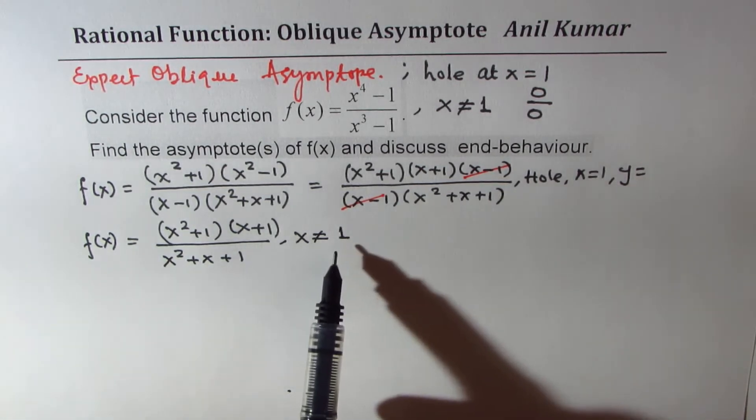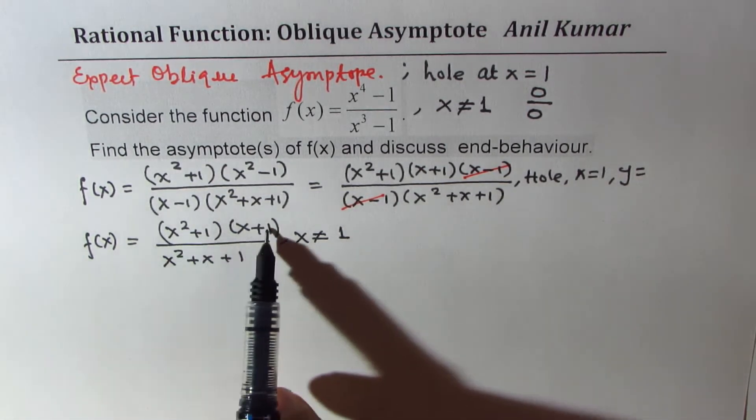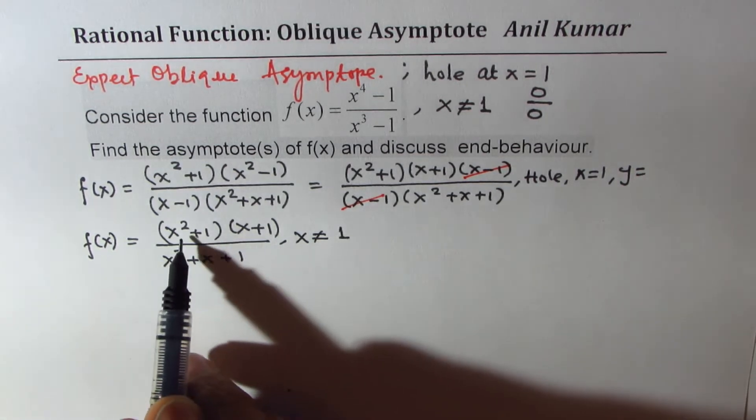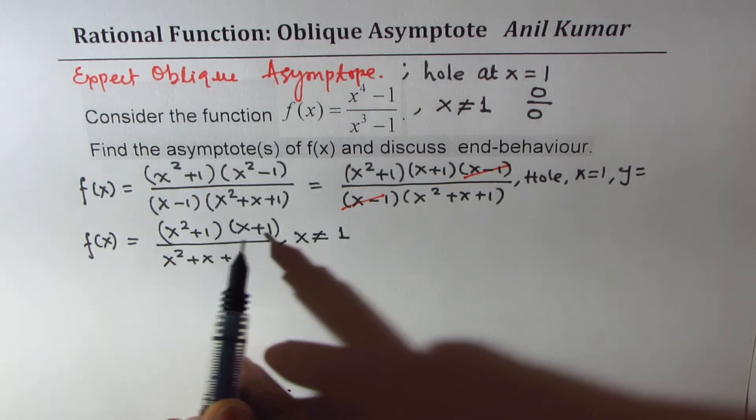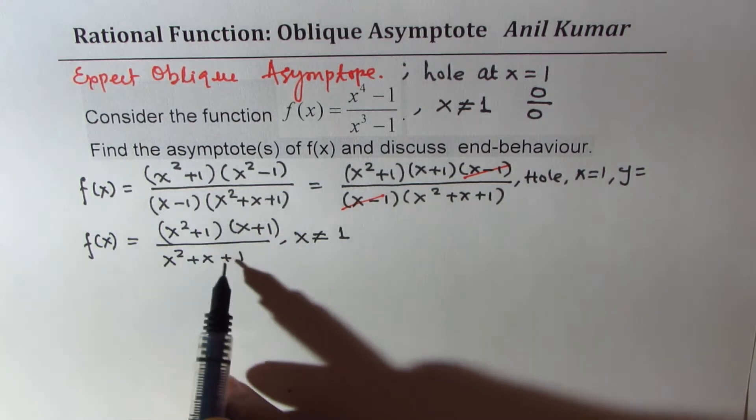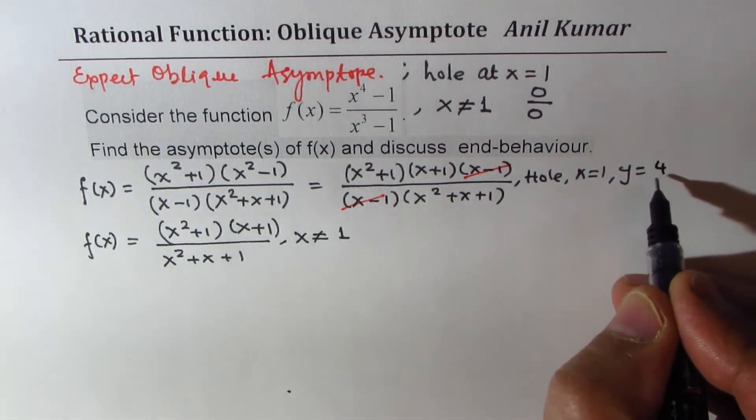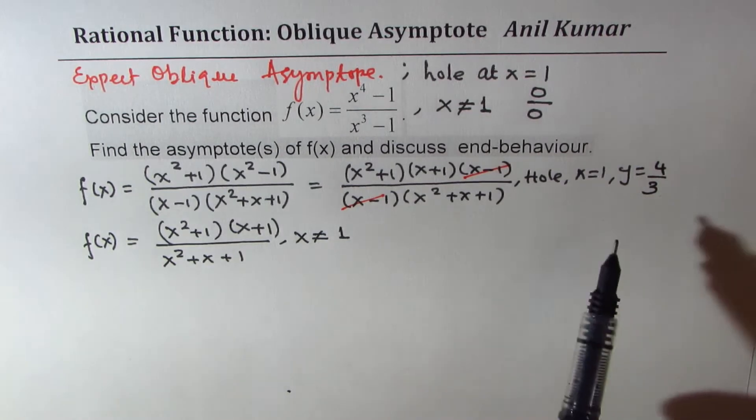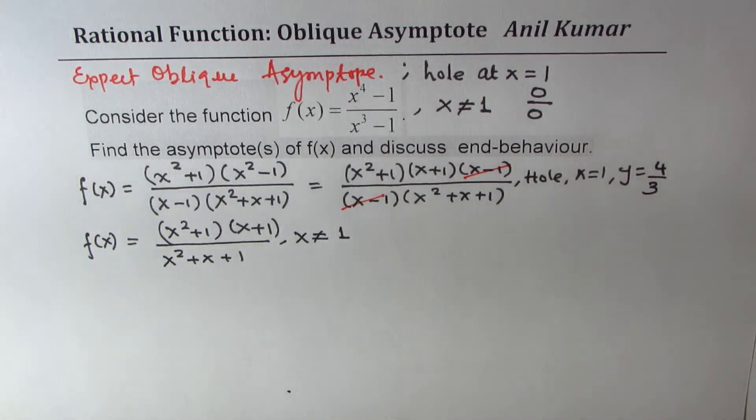So the hole will be, when I substitute 1 here, I get 1 plus 1 as 2. Here also we get 1 plus 1 as 2, and here we get 4 over 3. So the y value is 4 over 3. Do you see that? So we have a hole which is at 4 over 3.